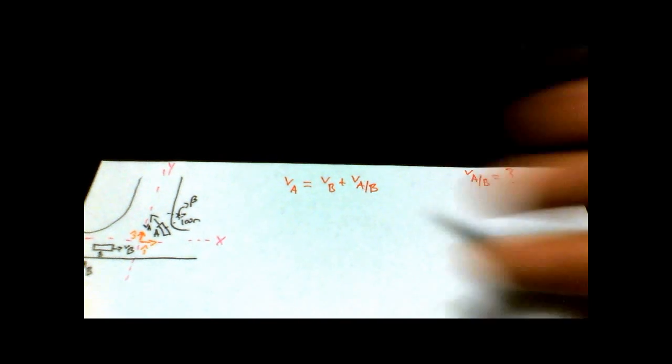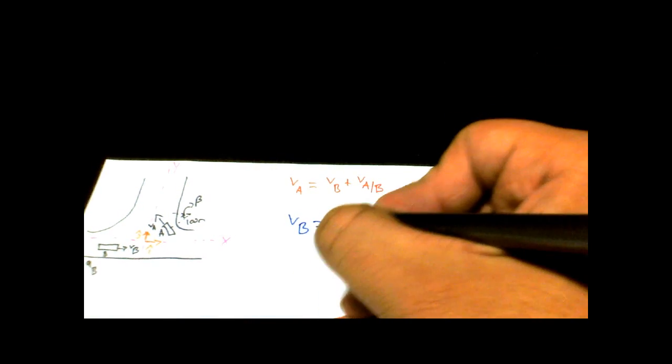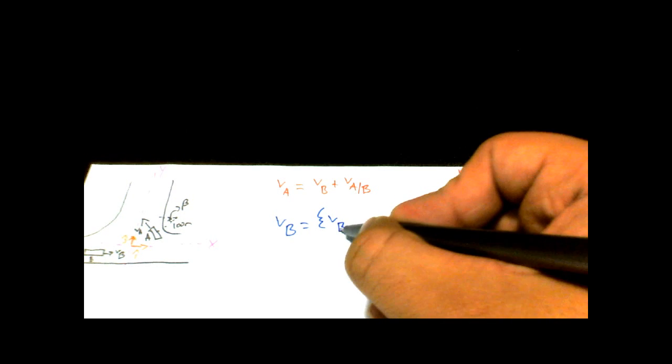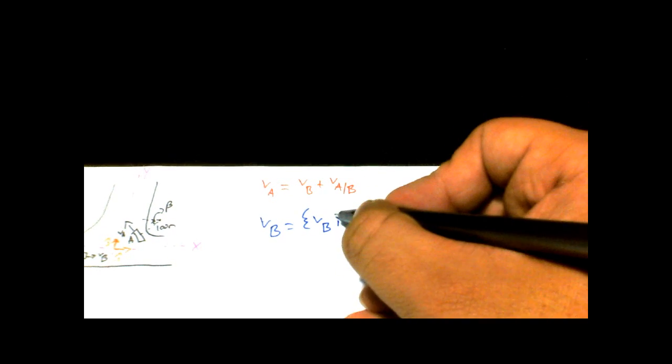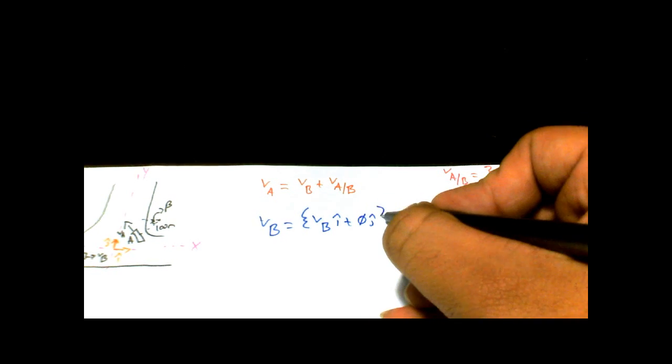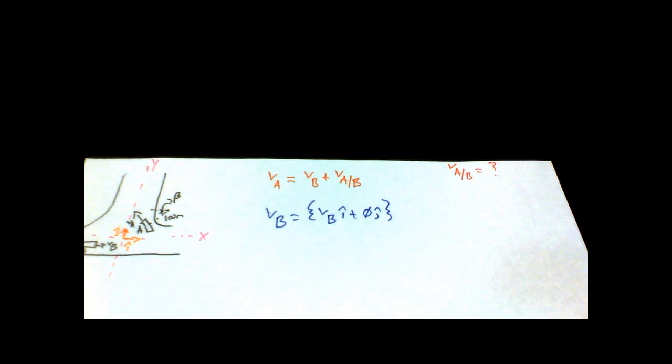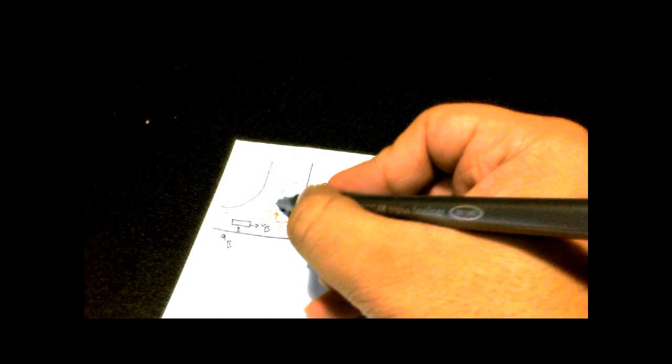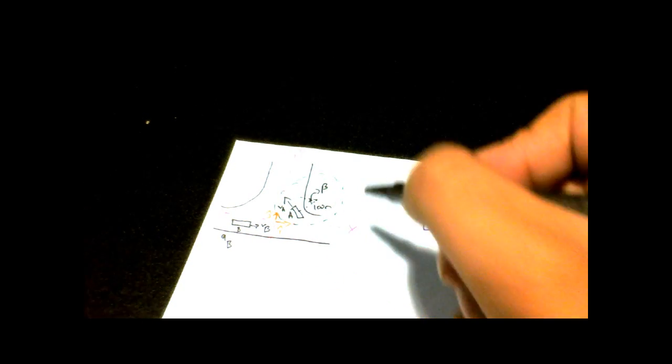So, I'm going to be writing all these in Cartesian vector form. So, let's start with the easy one, which is V of B. So, V of B equals, that's easy, it's just V_B i plus zero in the j direction. V of A is a tad bit more complicated, but it's nothing that we can't deal with, because we're awesome. So, I'm going to do my little zoom circle here.